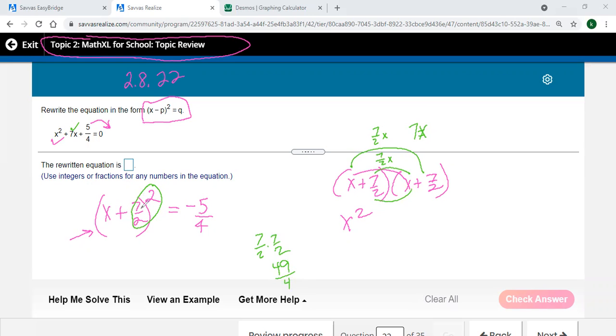So you've added, by writing it in this form, this perfect square form on the left, you've added 49 fourths that wasn't in the problem. So you've got to add that 49 fourths to both sides of the equation, which 49 minus this 5 would be 44, right? 44 fourths.